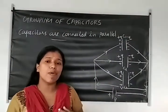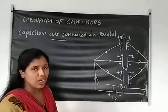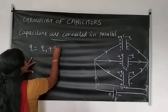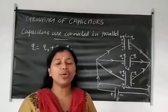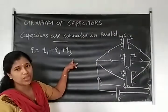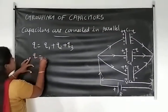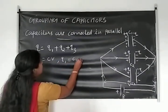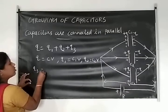Total charge is the sum of individual charges. Then charge Q is equal to Q1 plus Q2 plus Q3 for three capacitors. For four capacitors, plus Q4, and for N capacitors, plus QN. We know that Q is equal to CV, so Q1 is equal to C1V, Q2 is equal to C2V, and Q3 is equal to C3V.